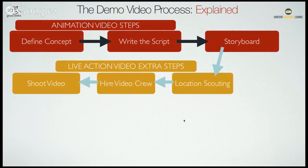If we were doing a live action video, after the storyboard it would take the route of location scouting — finding a place to shoot, whether at your office or a production set — hiring a video crew, and then actually shooting the video. That alone is a long process. We're already about two to three weeks into the process. And there's more: sometimes you have to do casting, props, dress the locations, and get permits. Live action video done professionally is a lot of work.